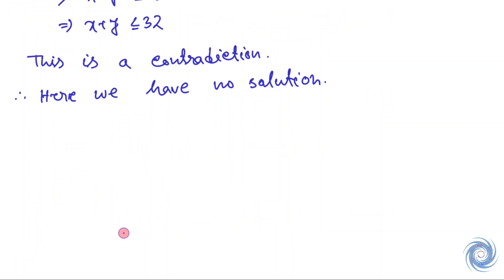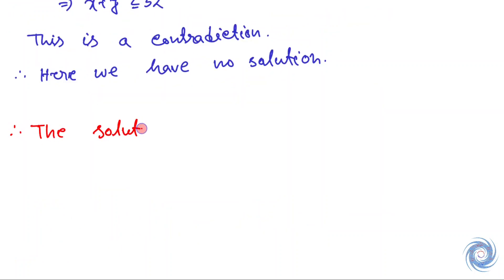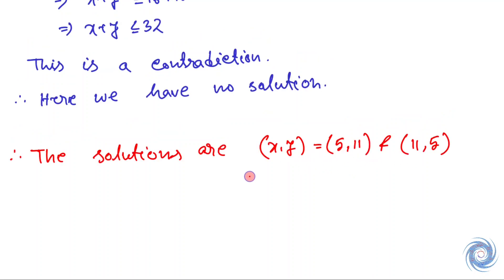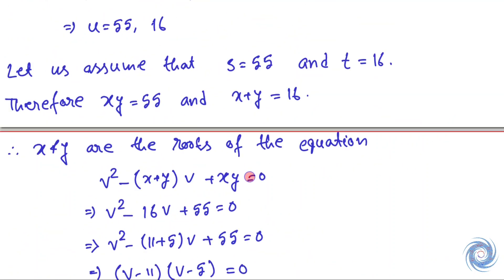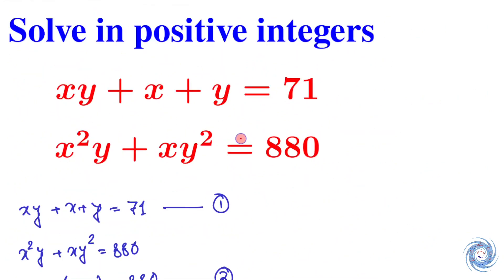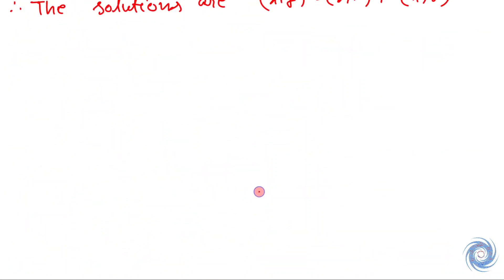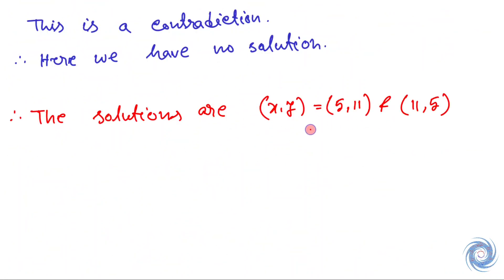Hence the final solution is (x, y) = (5, 11) and (x, y) = (11, 5), where x and y are both positive integers. So we are done. Thank you.